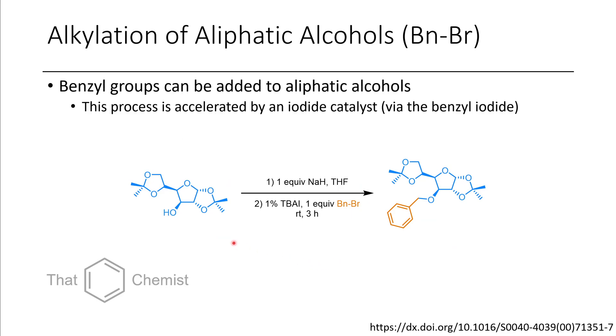In this next example, this is a literature example where we have this protected sugar derivative, and they deprotonate it, and then they add in benzyl bromide, and so they benzylate this position. And while you can find examples of these in the literature, and they can work, they still tend to have sporadic yields, but for benzyl bromide and mom chloride, they tend to work fairly well.